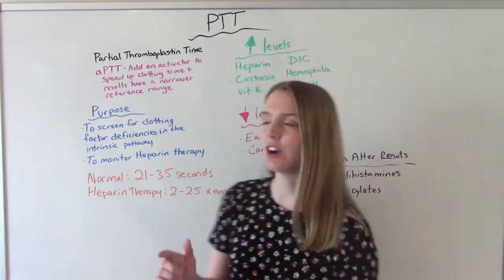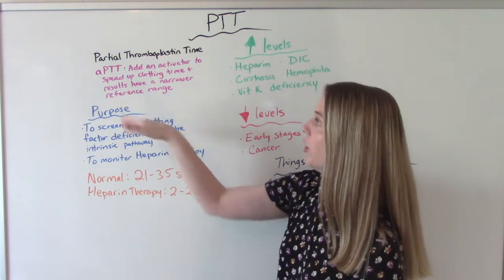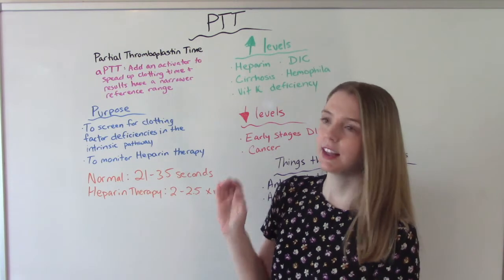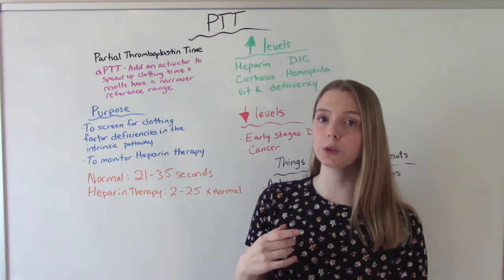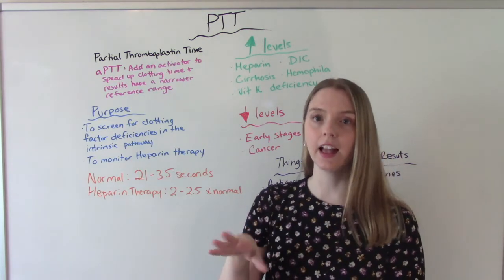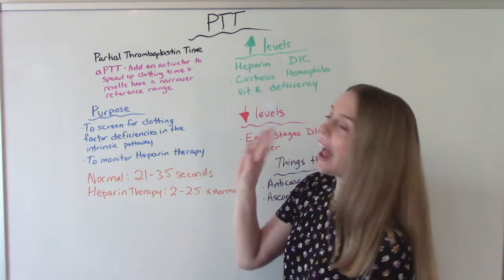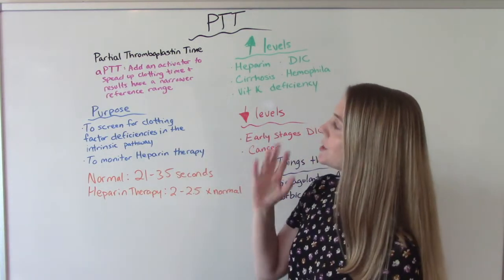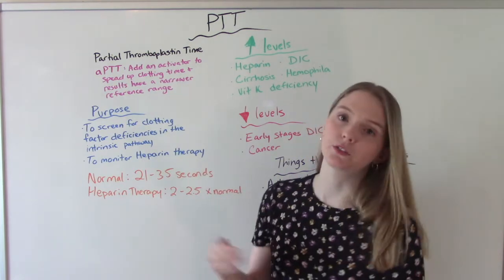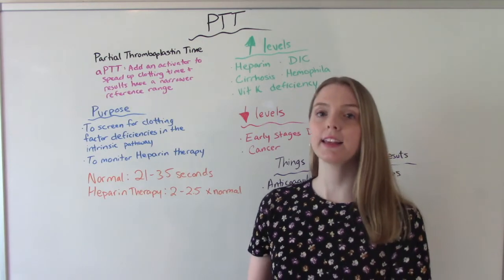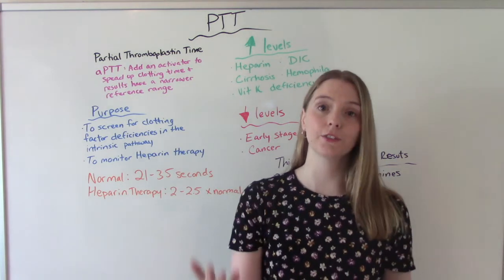The first thing I want to talk about is, well, what does that stand for? PTT is the partial thromboplastin time. Now, sometimes you will see the PTT and sometimes you will see the APTT. The APTT has an activator added to it, which helps speed up the clotting time, and the results will therefore have a narrower reference range. Your patient might get the APTT or the PTT — they're both looking for the same thing.